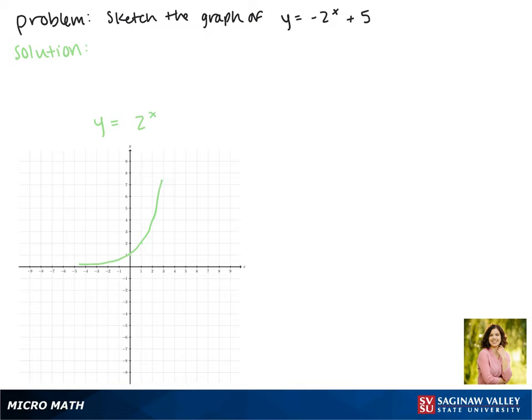Notice that it passes through the point. This is the parent function of what we're graphing, and we'll start by transforming it with reflections.